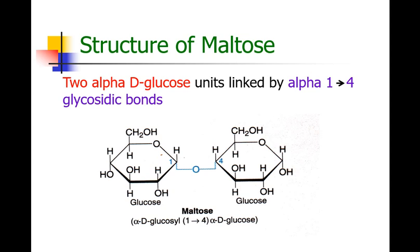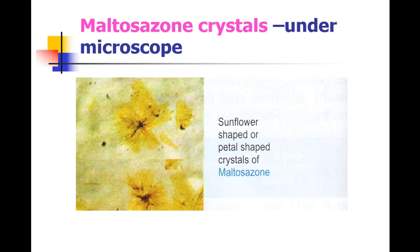In maltose, 2 glucose molecules are linked by an alpha-1,4 glycosidic linkage, and glucose is the repeating unit present in maltose. On the osazone test, maltose forms maltosazone — these are sunflower-shaped crystals, or crystals that look like the petal shape of a sunflower. This osazone test for maltose is the confirmatory test.